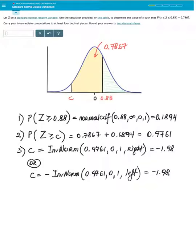Another way to do this is to say what if I find inverse norm of the same area but to the left. In other words what if I have an older calculator? How do I do this? It doesn't do the right tail. It only does the left tail. Well that is positive. It will be the mirror image of this point on this side with 0.9761 to the left. Well just make sure you take opposite of that quantity and that will give you negative 1.98 as well.